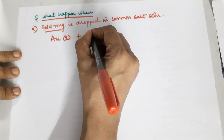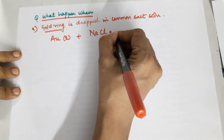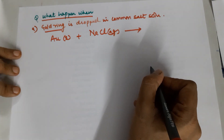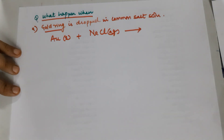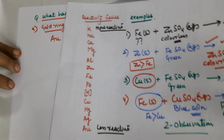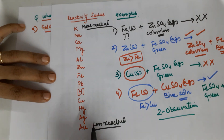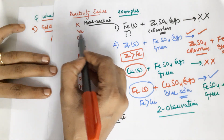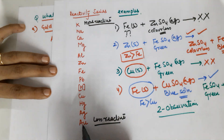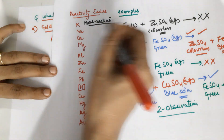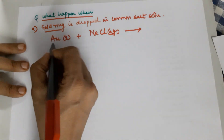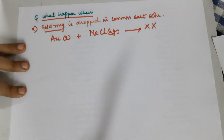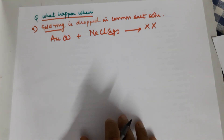What happens when a gold ring is dropped into common salt solution, which is NaCl aqueous? Will the reaction happen? Checking the reactivity series — gold is the last member and sodium is much more reactive. Since gold is much less reactive than sodium, nothing is going to happen in this reaction.